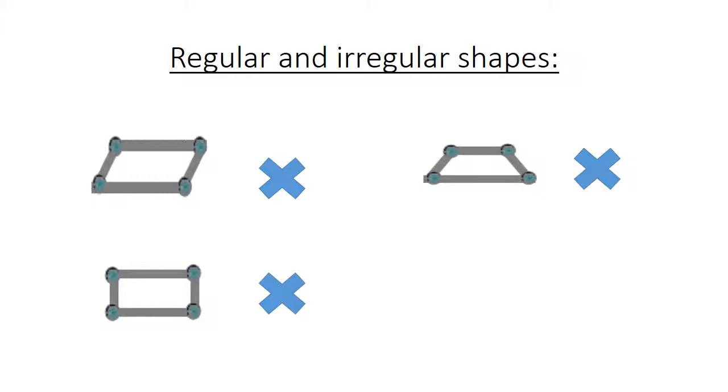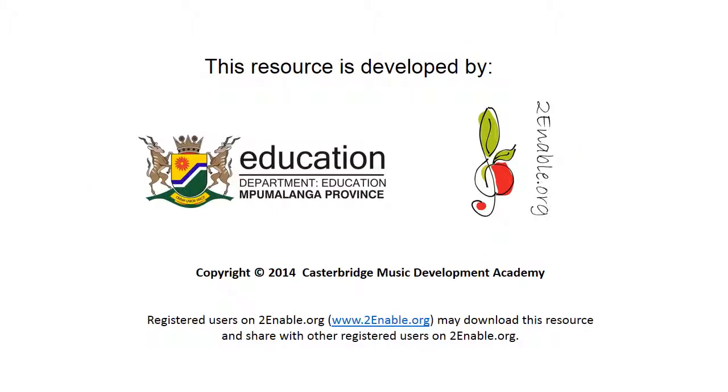Regular and irregular shapes. No, this is not a regular shape. Also, not a regular shape. Not a regular shape. Yes, we have a regular shape because all sides are equal. We have a regular shape.